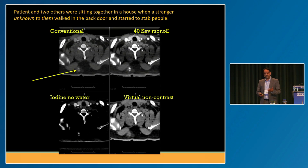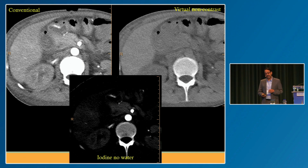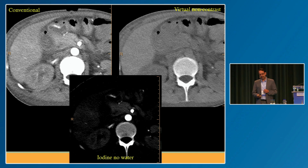Spectral CT is really good for detection of acute bleeding. In GI bleed, you can eliminate the virtual non-contrast and nicely see a duodenal bleeder. You can also eliminate a true non-contrast acquisition — here you can see a nice bleeder in the duodenum that was confirmed on angiography.